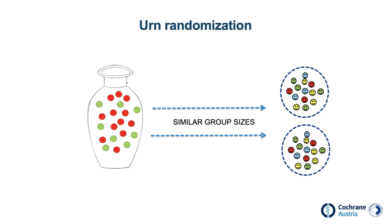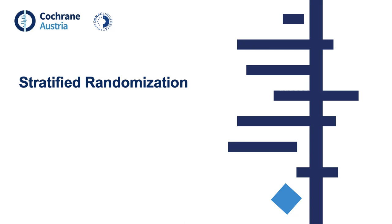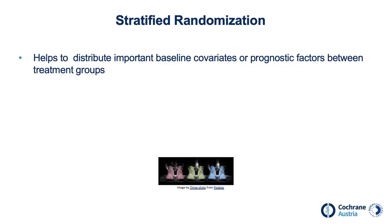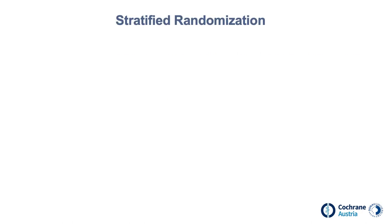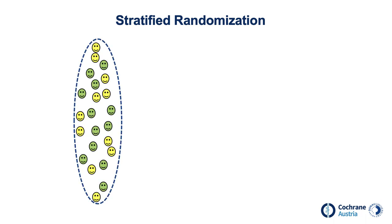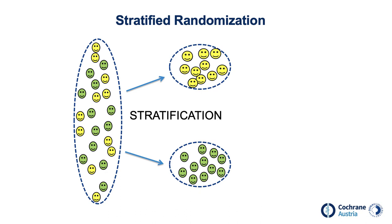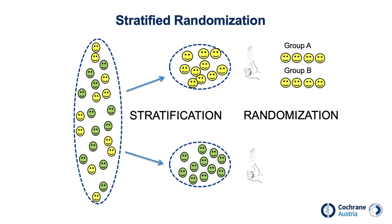Sometimes we are not only concerned about similar sample sizes, but also want to make sure that important prognostic factors are distributed equally. That's when stratified randomization comes into play. Stratified randomization helps to distribute important baseline covariates or prognostic factors between treatment groups, and is usually limited to one or two stratification factors. It is often used in multicenter trials to ensure each center contributes data to all treatment groups. For example, if a population varies a lot by age, we first stratify into younger and older participants, then randomize within each stratum to group A and group B.